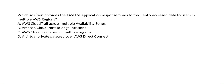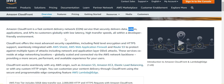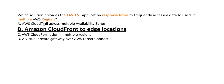Which solution provides the fastest application response times to frequently accessed data for users in multiple AWS regions? The keywords are 'fastest response times' and 'multiple regions.' Whenever you see this kind of question, the answer is always CloudFront. CloudFront is a highly secure and fast content delivery network providing low latency and high transfer speeds. CloudTrail is used for saving logs for auditing — a different purpose.